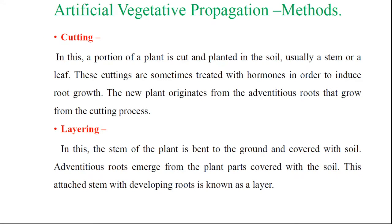What are the types of artificial methods of vegetative propagation? Generally we know four types: cutting, layering, grafting, and budding, but one newly added is tissue culture technology. Cutting is a portion of the plant that is cut and planted in soil — usually a stem, or it may be a leaf or root. These cuttings are sometimes treated with hormone in order to induce growth, and a new plant originates from adventitious roots that grow from the cutting.